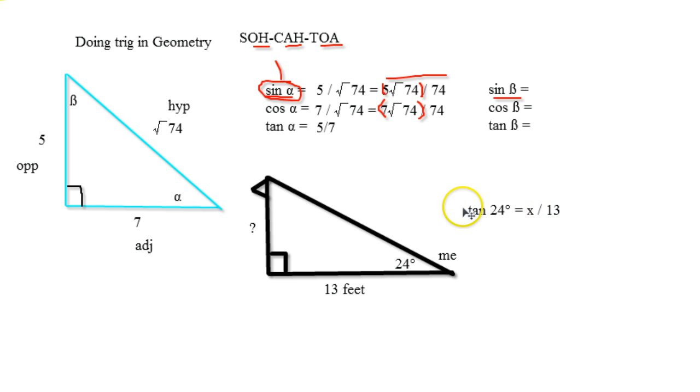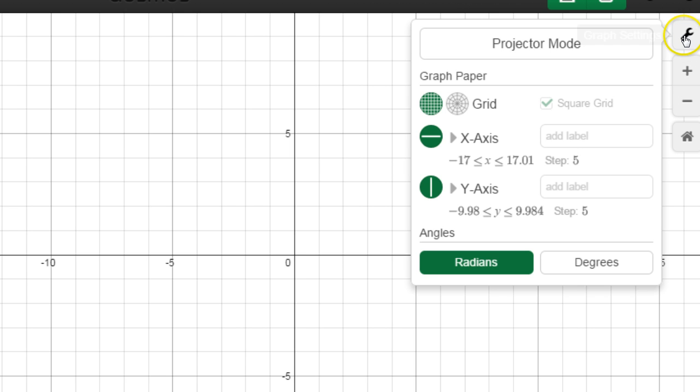Opposite over adjacent. Now what we're going to do is, since this is just a number, this is literally just a number, and this is an x divided by a number, to get rid of this divide by a number, we're going to times both sides by 13. So 13 times tangent of 24 degrees is going to be equal to x. Now when we put that in the calculator, I'll show you how to do it.